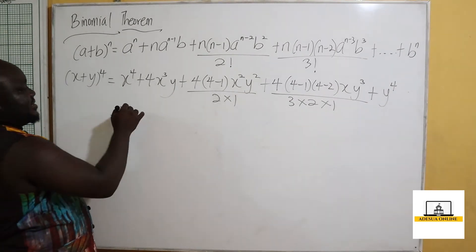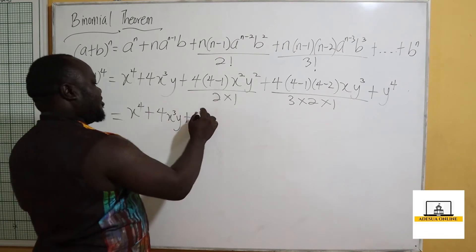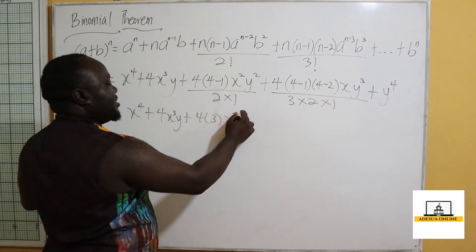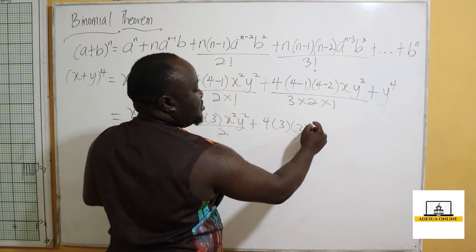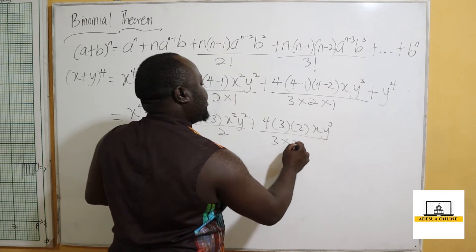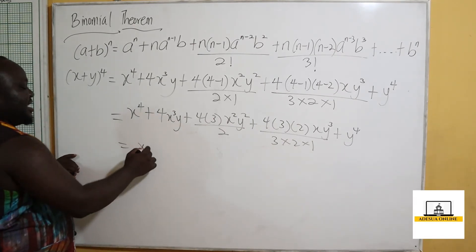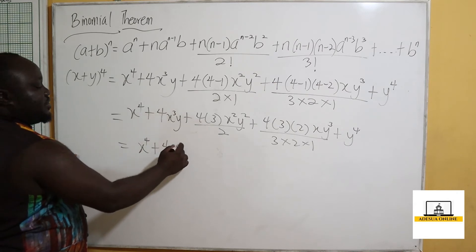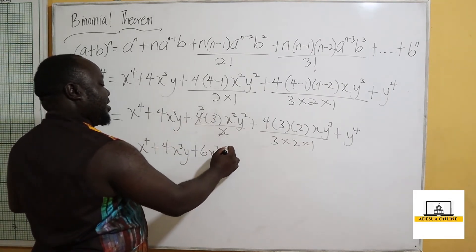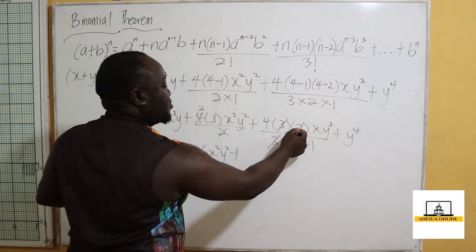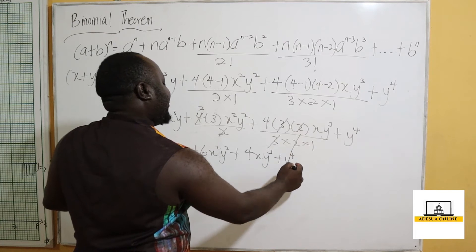This gives us x raised to the power 4, plus 4x cubed y, plus 4 times 3 times x squared y squared over 2, plus 4 times 3 times 2 times x y cubed over 3 times 2 times 1, plus y raised to the power 4. Simplifying further: 2 will cancel, giving 6x squared y squared, and 3 and 2 cancel, giving 4xy cubed. So the final expansion is x⁴ plus 4x³y plus 6x²y² plus 4xy³ plus y⁴.